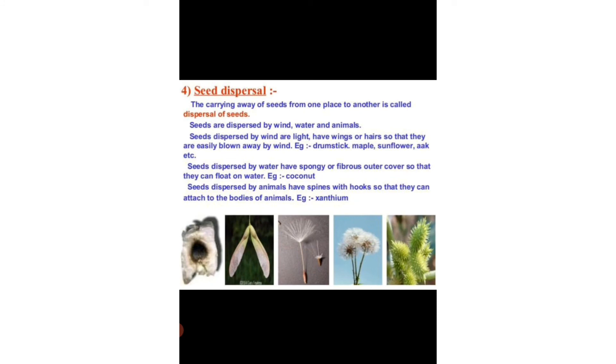Now our last topic is seed dispersal. The carrying away of seeds from one place to another is called seed dispersal. Seeds are dispersed by wind, water and animals. Seeds dispersed by wind are light, have wings or hair so that they are easily blown away by wind, for example drumstick, maple, sunflower, etc.